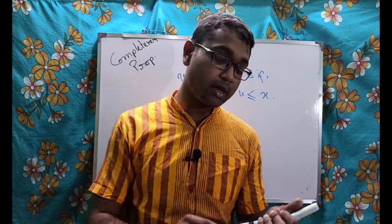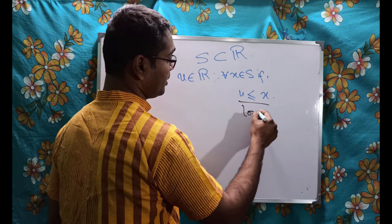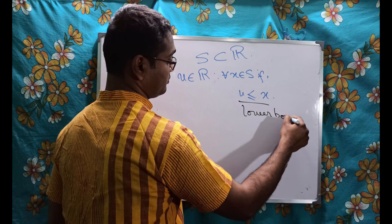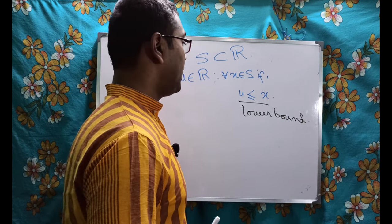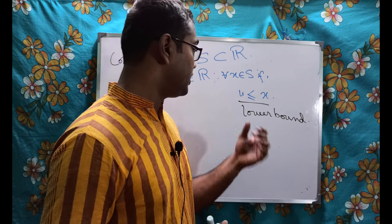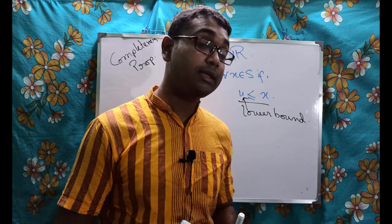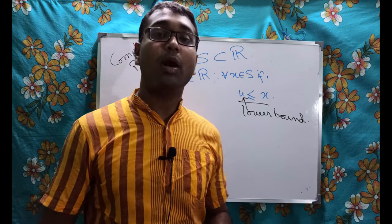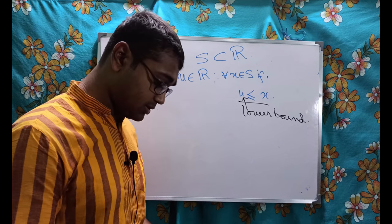So if this happens - there is a particular number U which is less than or equal to all elements of S - then we will call it as lower bound. We call this U as lower bound and we say that the set S is bounded below. Why bounded below? Because just see.